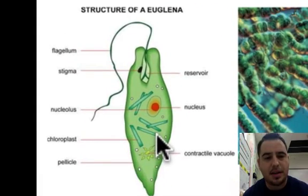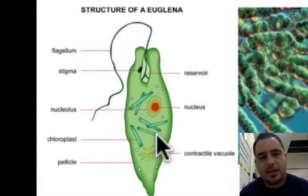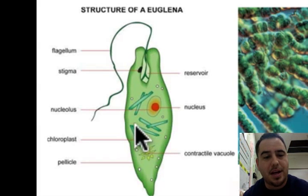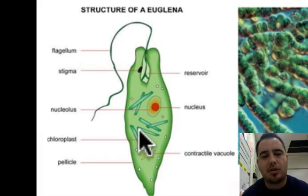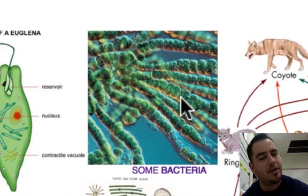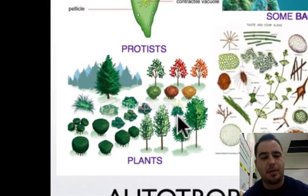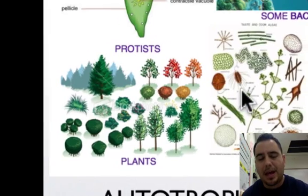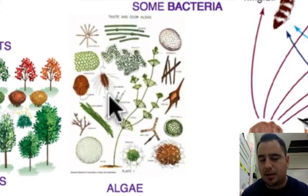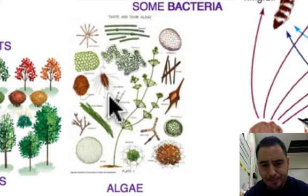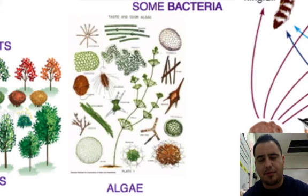Examples of autotrophs include protists — unicellular eukaryotes that have a nucleus and a chloroplast, giving them their green color. There's also cyanobacteria, plants, and algae which include kelp, seaweed, and other unicellular protists. All of these make their own food through photosynthesis.